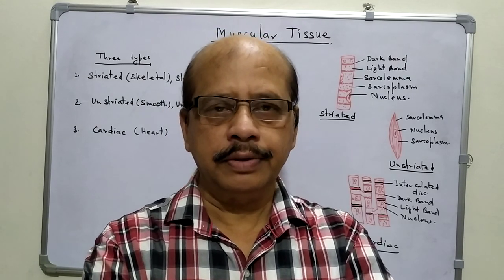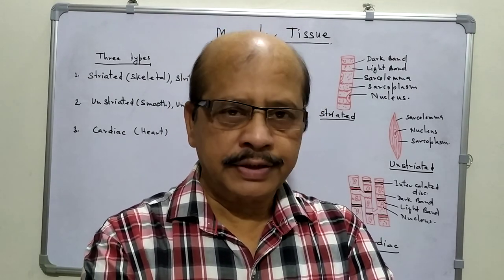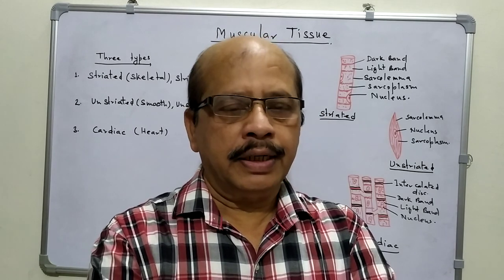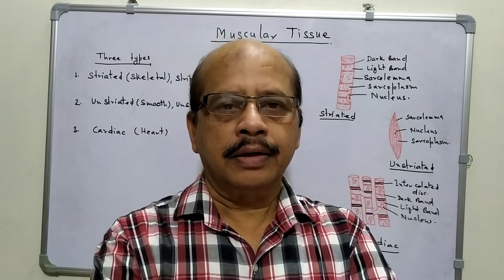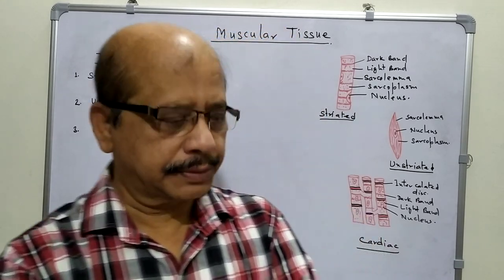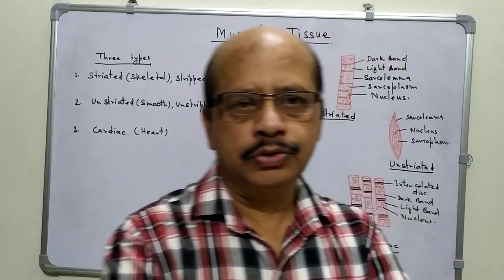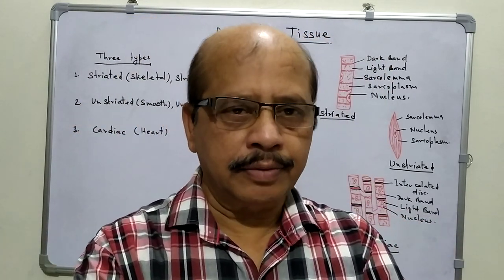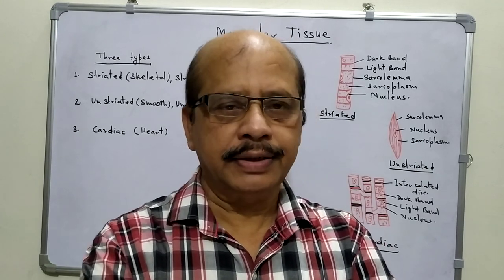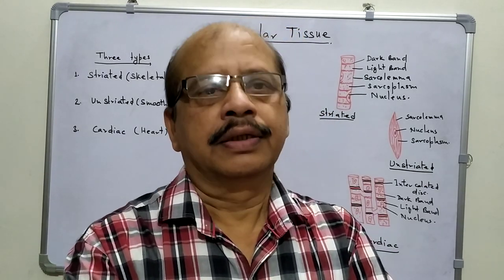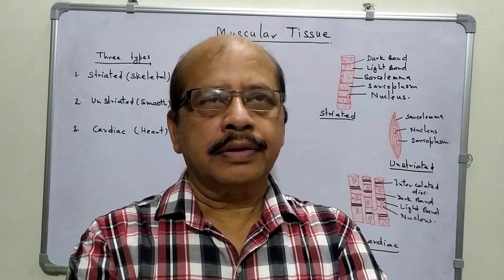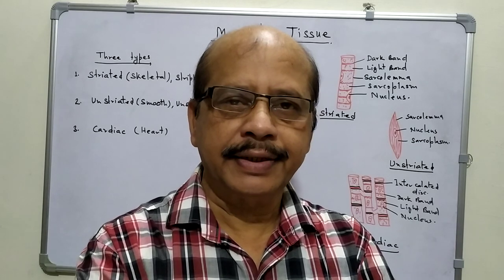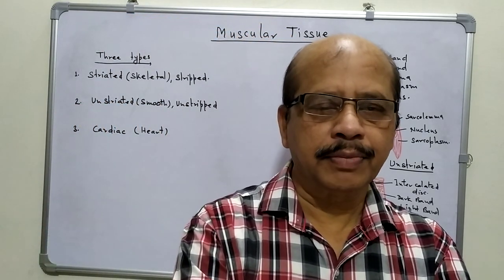Hello students, welcome to all of you in bio classes. Today's topic is Muscular Tissue. As you know, movement and locomotion are the characteristic features of all animals. In plants, usually locomotion is not there. But in animals, both external and internal types of movement are required and are a must. Today we are going to discuss about the muscles which are responsible for the movement of external as well as internal parts of the body. These muscles are known as muscular tissues.